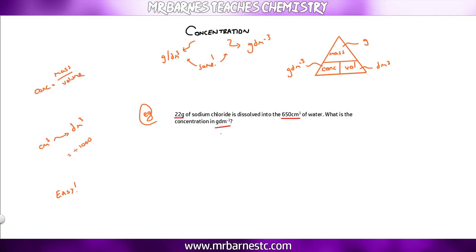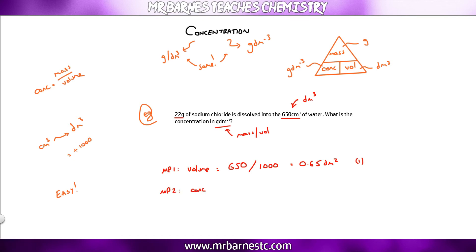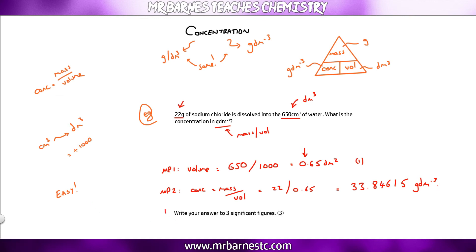For example: 22 g of sodium chloride dissolved in 650 cm³ of water — what is the concentration in g/dm³? Step one: convert the volume: 650 ÷ 1000 = 0.65 dm³. Step two: mass ÷ volume = 22 ÷ 0.65 = 33.84615 g/dm³. Normally round to two decimal places, but if asked for three significant figures: 33.8 g/dm³.